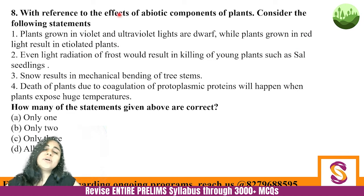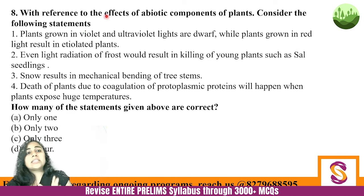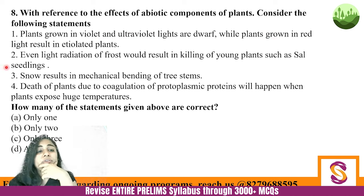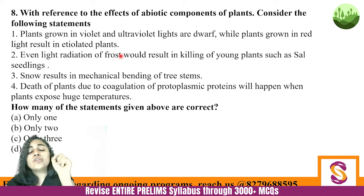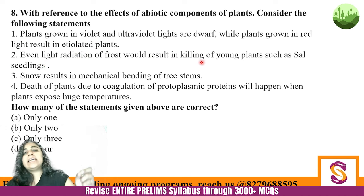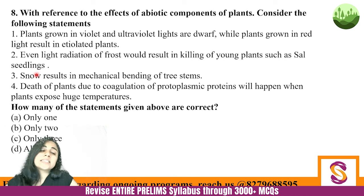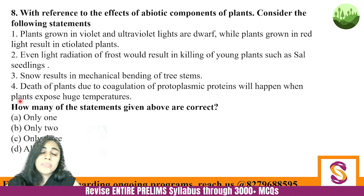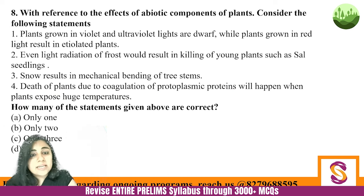Next question: With reference to effects of abiotic components on plants, consider the following statements. One: Plants grown in violet and ultraviolet lights are dwarf, while plants grown in red light result in etiolated plants. Two: Even light radiation of frost would result in killing of young plants such as sal seedlings. Three: Snow results in mechanical bending of tree stems. Four: Death of plants due to coagulation of protoplasmic proteins will happen when plants are exposed to very high temperatures. How many of the given statements are correct?